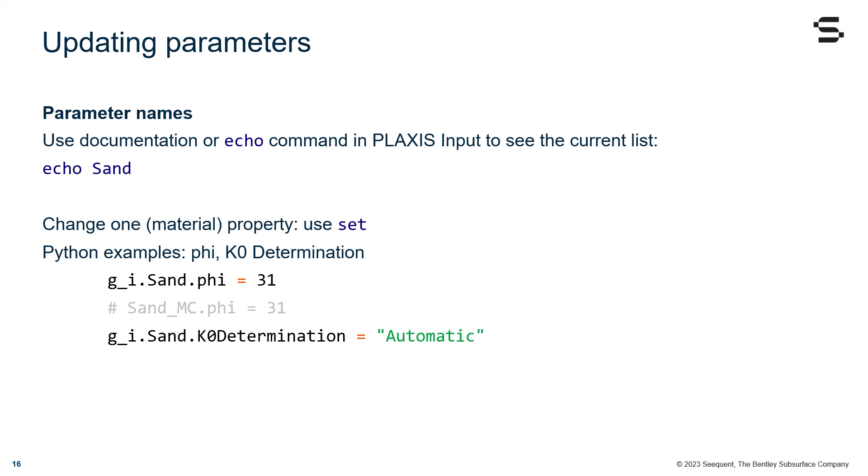I can run the following: g_i.Sand.phi = 31. Or I can use the variable I created before, from the previous slides, Sand_MC.phi = 31. And g_i.Sand.K0Determination = "Automatic".